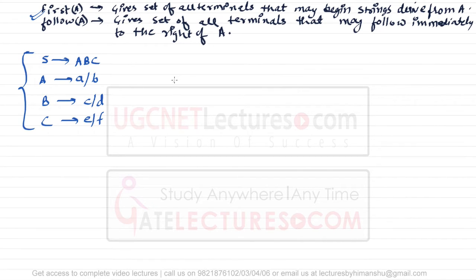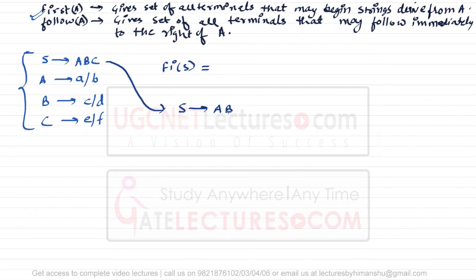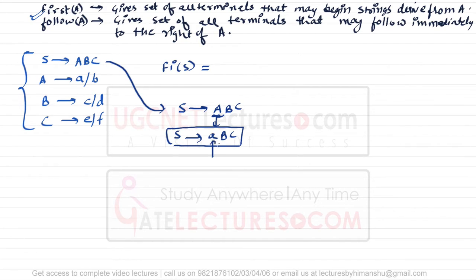For this grammar, let us identify what is FIRST of S. FIRST of S means the set of all terminals that may begin strings derived from S. We have S derives A B C. If we create any string from S, variable A can be replaced by small a, giving string a b c — so strings can start with small a.